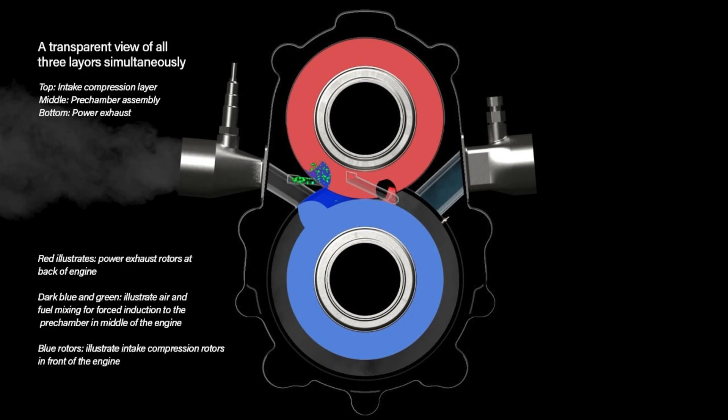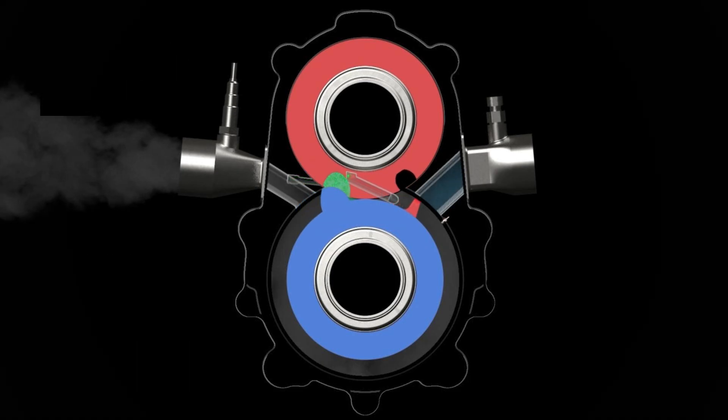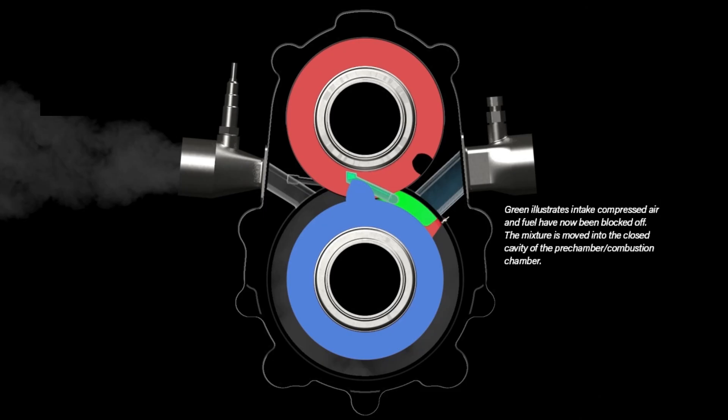Red illustrates power exhaust rotors at the back of the engine. Dark blue and green illustrate air and fuel mixing for forced induction to the pre-chamber in middle of the engine. Blue rotors illustrate intake compression rotors in front of the engine.